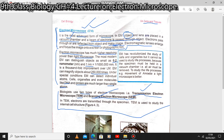There are two types of electron microscope: the Transmission Electron Microscope and the Scanning Electron Microscope. The abbreviation TEM stands for Transmission Electron Microscope and SEM stands for Scanning Electron Microscope. A helpful tip: T stands for Transmission and S stands for Scanning.